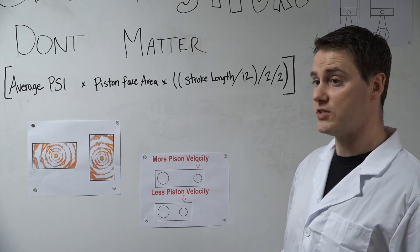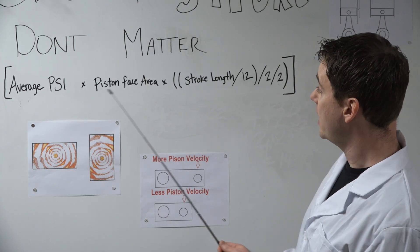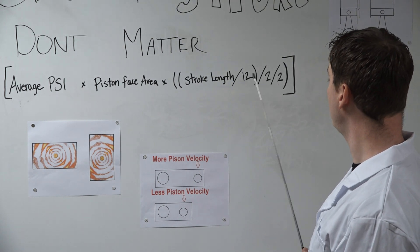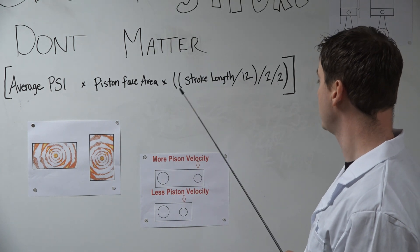The formula is average PSI times piston face area times stroke length divided by 12 divided by 2 divided by 2. And if you're not a huge fan of math, don't worry, this will all make sense in just a second.